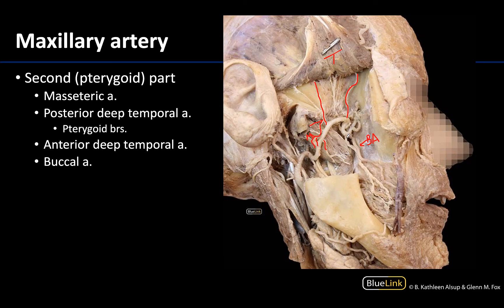You can see that the buccal artery in this particular donor is coming off quite anteromedial to the lateral pterygoid muscle, but it is still typically considered a branch of the second part of the maxillary artery. Branches of the third part, as I mentioned, don't really start occurring until you get to that pterygomaxillary fissure, which is quite medial. So those are the main branches of the first and second parts of the maxillary artery. As always, please take time to try to identify these structures on your own, and if you have any lingering questions, feel free to reach out. Thank you for your time and attention.